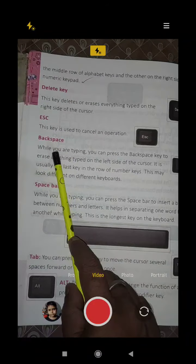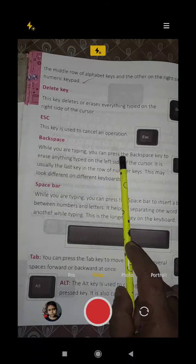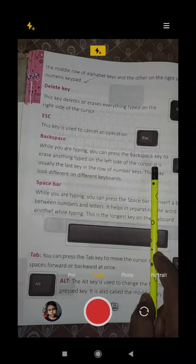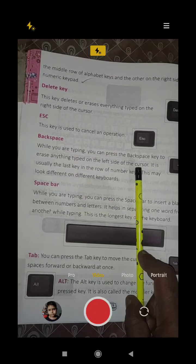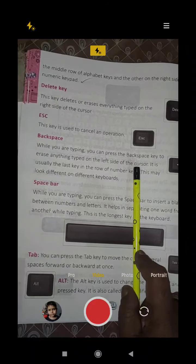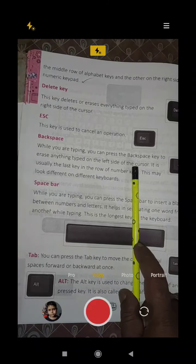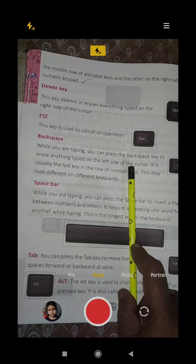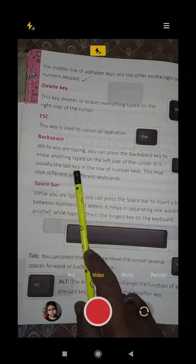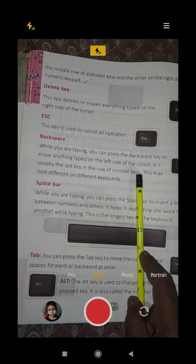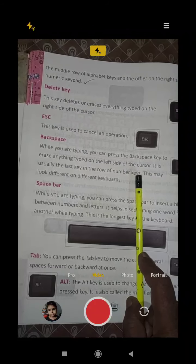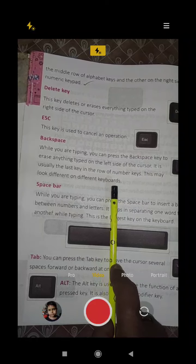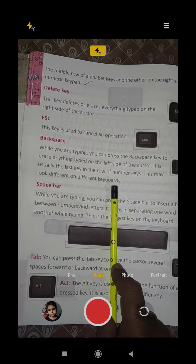Now the backspace. While you are typing, you can press the backspace key to erase anything typed on the left side of the cursor. Keep in mind that backspace erases on the left side of the cursor and delete erases on the right side. It is usually the last key in the row of number keys. This may look different on different keyboards - it is small in some keyboards and big in others.